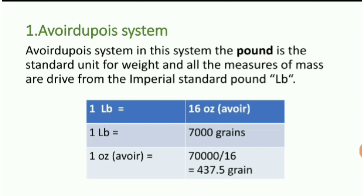Avoirdupois system: in this system, the pound is the standard unit for weight and all measures of mass are derived from the imperial standard, the pound, denoted as lb. Conversion table: one pound is equal to 16 ounces; one pound is equal to 7000 grains; and one ounce (avoirdupois) is equal to 437.5 grains.